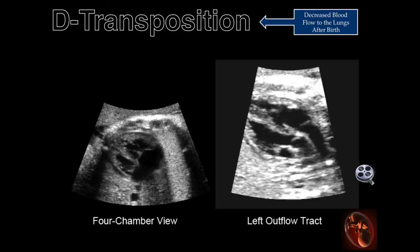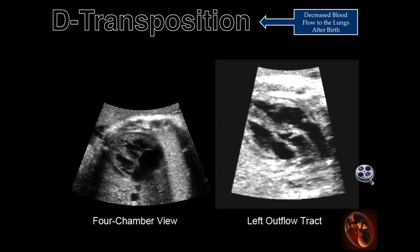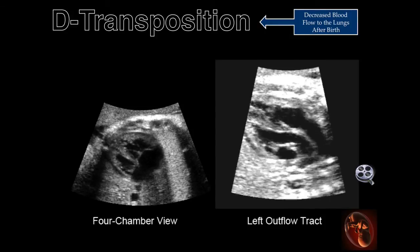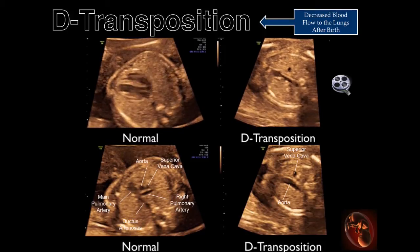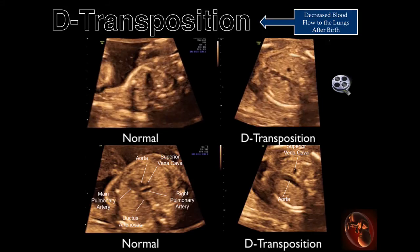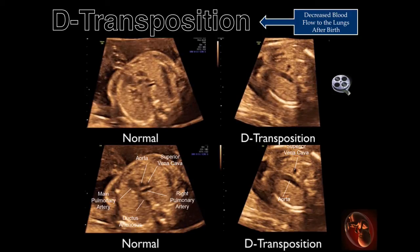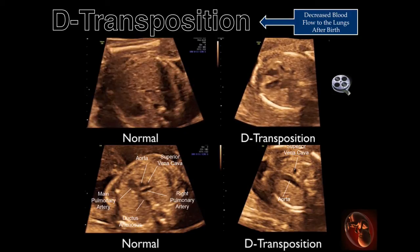This is a cine clip illustrating the findings described in the previous slide. The cine clip of the transverse sweep through the chest compares the normal fetus with one with D-transposition.